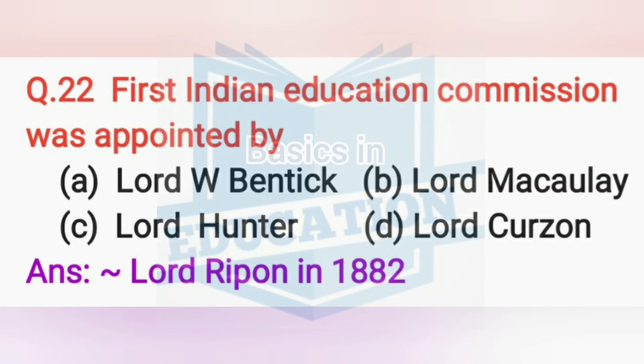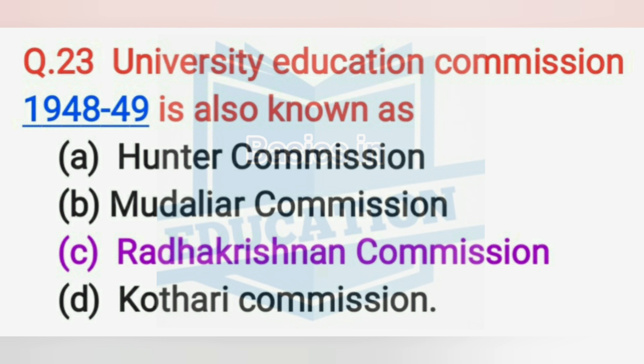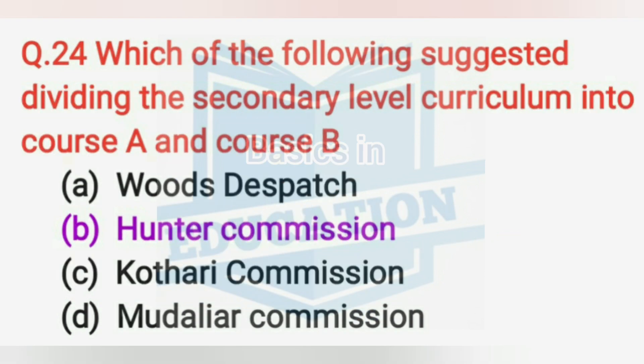The First Indian Education Commission was appointed by Lord Ripon in 1882. The University Education Commission of 1948–1949 is also known as the Radhakrishnan Commission. The Hunter Commission suggested dividing the secondary level curriculum into Course A and Course B.